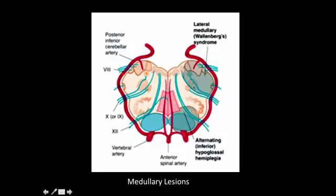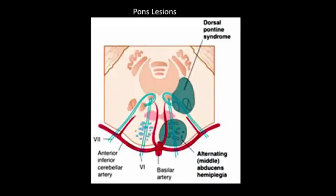So if you see this pattern — spinocerebellar, spinothalamic, fifth spinal nucleus, Horner syndrome, and ninth and tenth nuclei deficit — you can say this is PICA syndrome or lateral medullary syndrome, and you may see it in stroke.